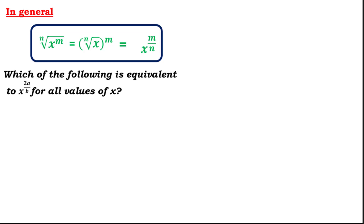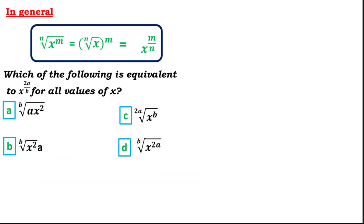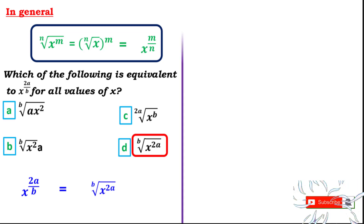For example: which of the following is equivalent to x raised to the power 2a over b? This is the exponential form, and we need to find the radical form. The outside number is b and the inside power is 2a, so the correct answer is the b-th root of x raised to the power 2a. The correct answer is D.